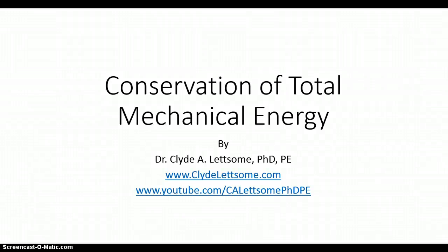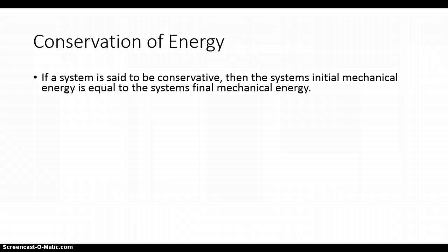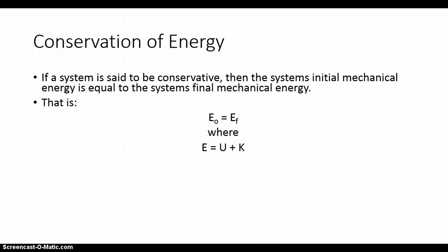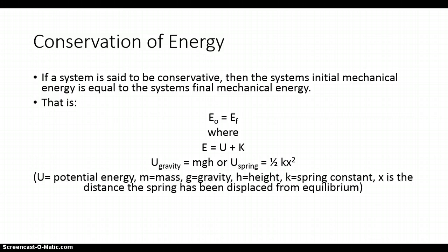In this video we will explore conservation of total mechanical energy. If a system is said to be conservative, then the system's initial mechanical energy is equal to the system's final mechanical energy — that is, E sub 0 is equal to E sub F, where E is equal to U plus K. U is the potential energy, which could be the gravitational potential energy or the spring potential energy, depending on the type of problem.